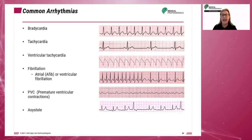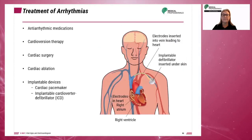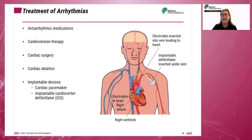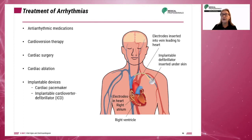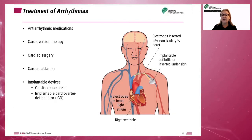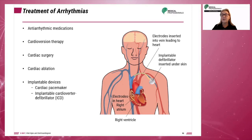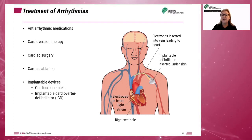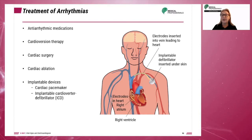An asystole is the absence of electrical activity in the heart or no heartbeat. There are a number of treatments for arrhythmias. Anti-arrhythmic medication is the most common treatment. Others include cardioversion therapy, when electrical shocks are sent to the heart by placing electrodes on the chest; cardiac surgery; cardiac ablation, when the sites of irregular signals are destroyed; and the placement of implantable devices such as the cardiac pacemaker or the implantable cardioverter defibrillator or ICD.